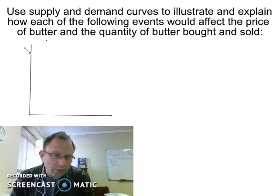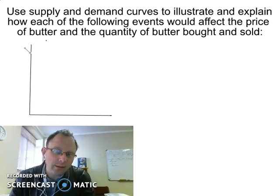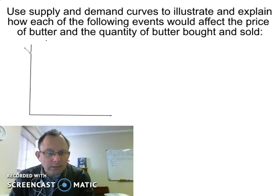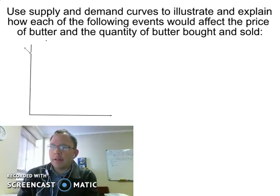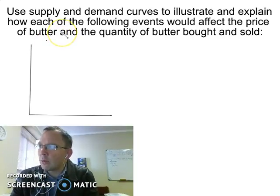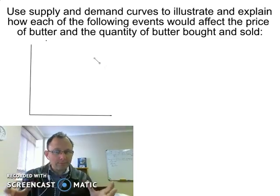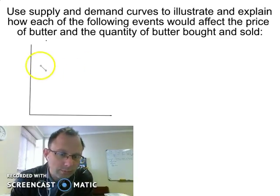The first question we are going to look at is drawing a simple demand and supply curve and showing what will happen to equilibrium price and quantity when we have a movement in one of the prices of substitute goods. We are asked to draw demand and supply for butter and what will happen to equilibrium price and quantity of butter if there's an increase in the price of margarine. Butter and margarine are substitute products, so let's draw a basic demand and supply curve.